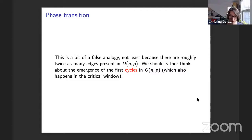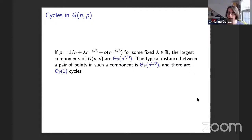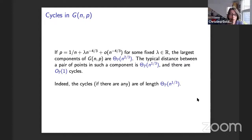Let me remind you of some facts about the critical components of the Erdős-Rényi random graph. In GNP, in the undirected case, if I take P to be 1/n plus lambda times n to the minus four-thirds, then the largest components are on the order of n to the two-thirds, and the typical distance between a pair of points in such a component is on the order of n to the one-third. There are order-one cycles in such a component — a tight number of cycles — and those cycles have lengths on the order of n to the one-third, so on the order of the typical distance.